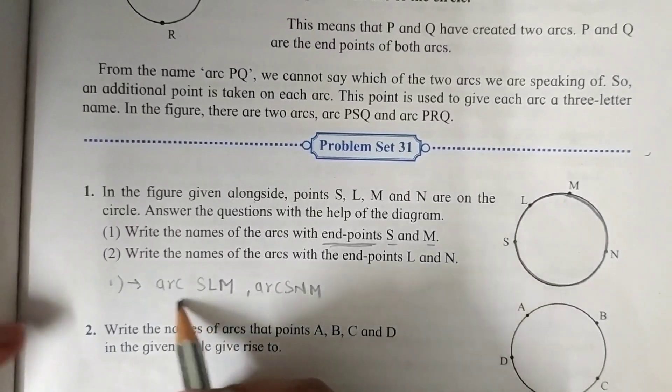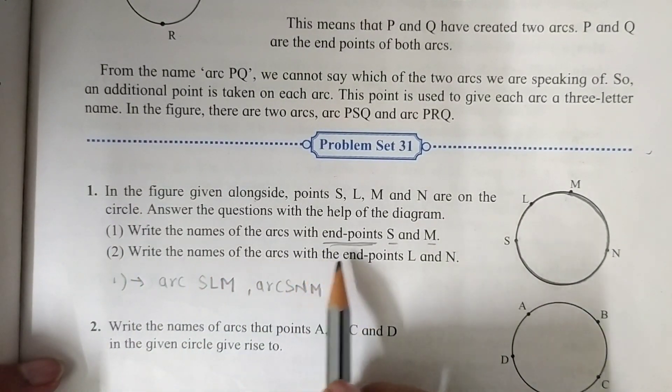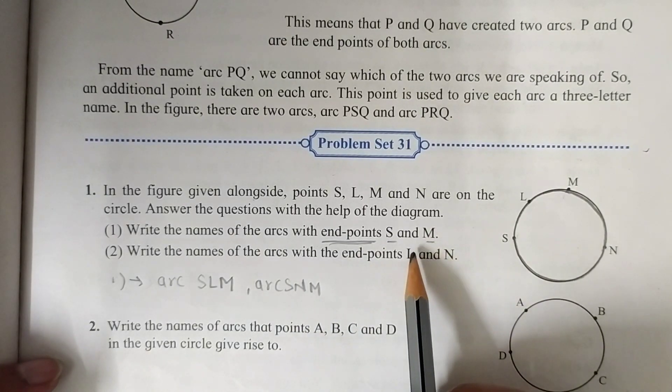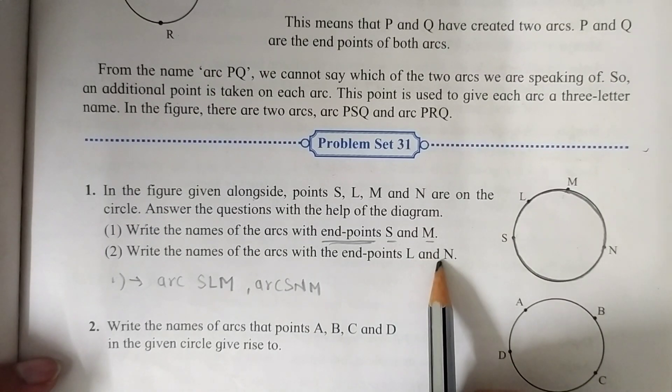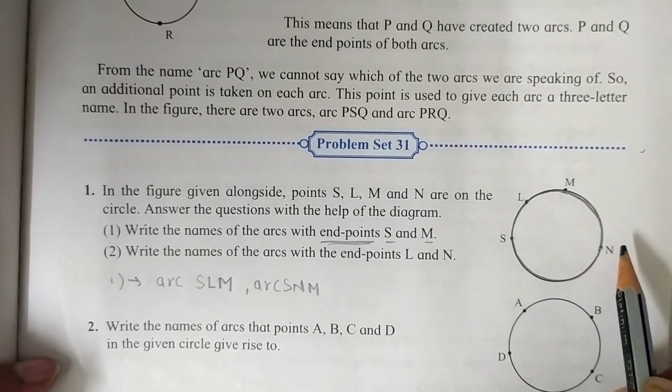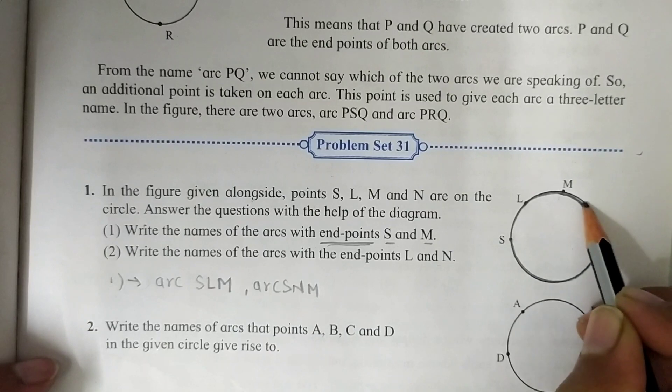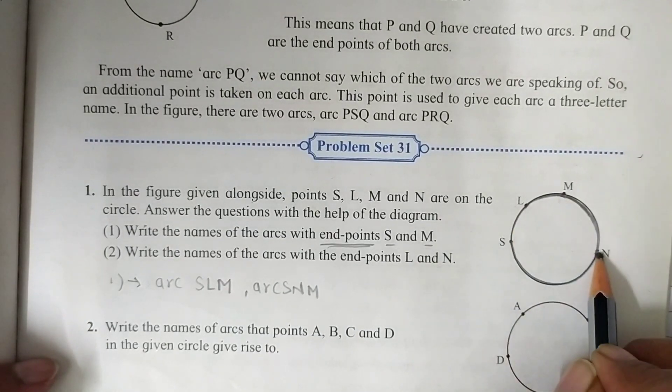Now look at the second question. Write the names of the arcs with the end points L and N. Here is L and here is N. Now look here. This is our first arc: L, M and N.